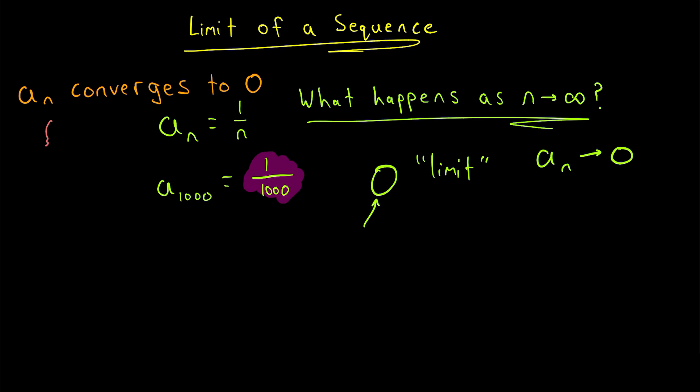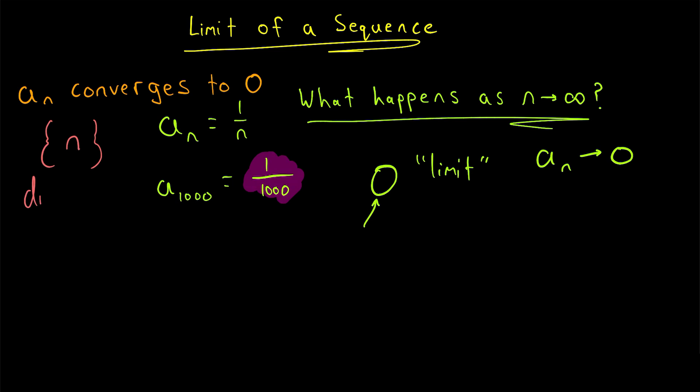If an infinite sequence doesn't have a limit — like the sequence where the nth value is just equal to n — it is called a divergent sequence.